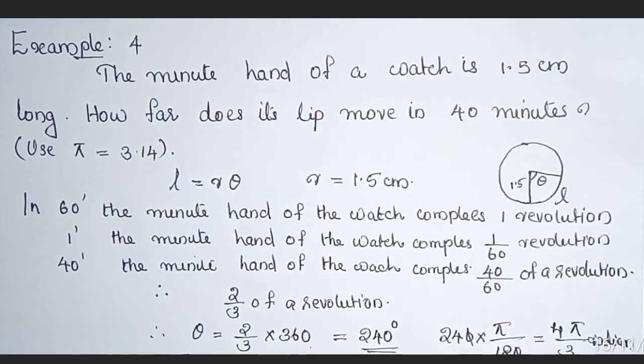Example 4: The minute hand of a watch is 1.5 cm long. How far does its tip move in 40 minutes? Use π = 3.14.